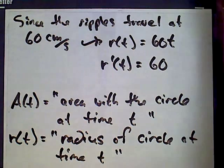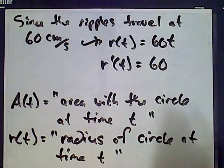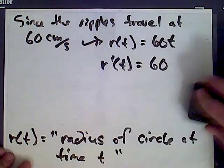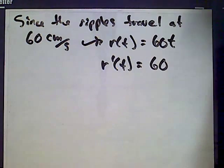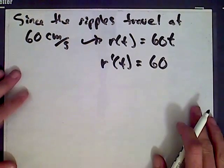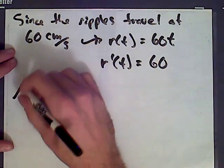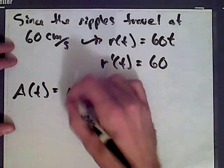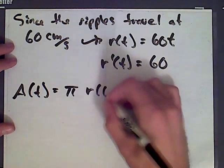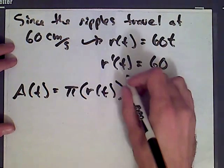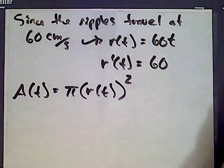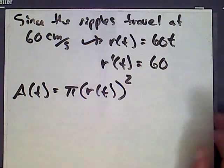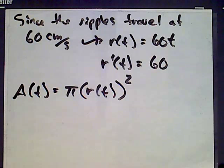So let's write an equation for A(t) in terms of r(t). We know the equation of a circle. So what we get is A(t) equals pi times r(t) squared. Now we need to find out the rate that the area is changing based on the rate that the radius is changing.